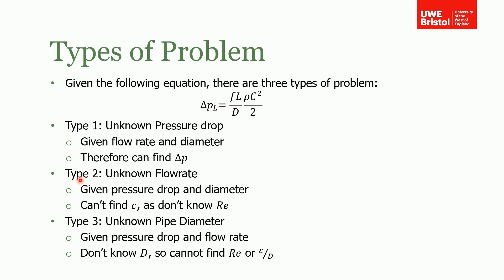In the Type 2 problem we have an unknown flow rate. So if we know the pressure drop and the diameter and we need to find the flow rate — the velocity — this causes a problem, because if we don't know the velocity we can't find a Reynolds number, we can't find a friction factor, and we get stuck in a bit of a loop.